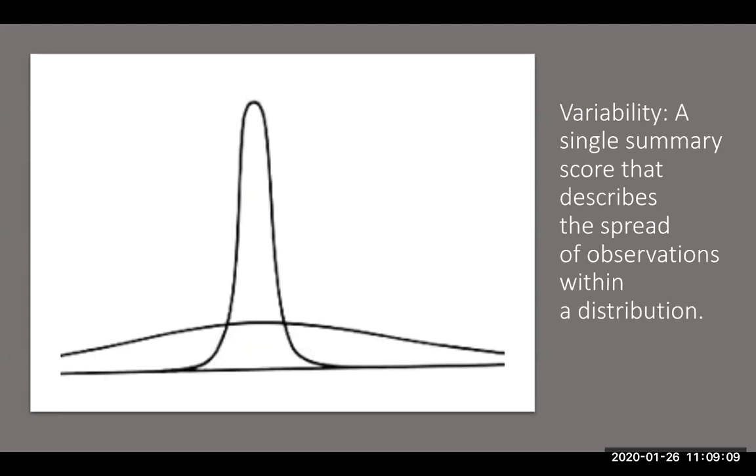What that means is we have already established what measure of central tendency we're going to use to describe our distribution. Remember that's a single score that best describes everybody. After we've done that, now let's see if we can come up with a single score that describes how everybody clusters around that central tendency.